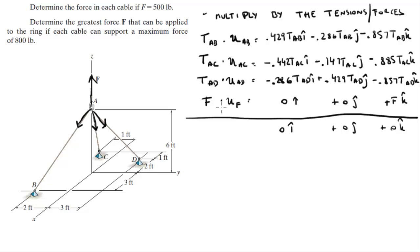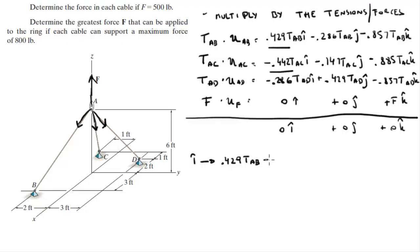From equilibrium we can build three equations by summing the i, j, and k components separately. The i-equation gives: 0.429 T_AB − 0.442 T_AC − 0.286 T_AD = 0.